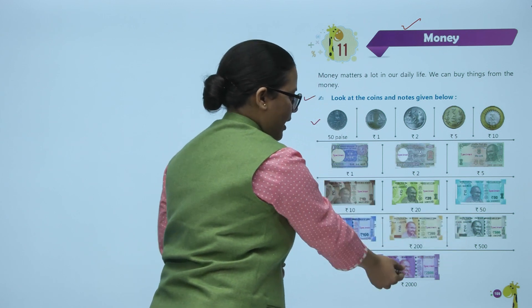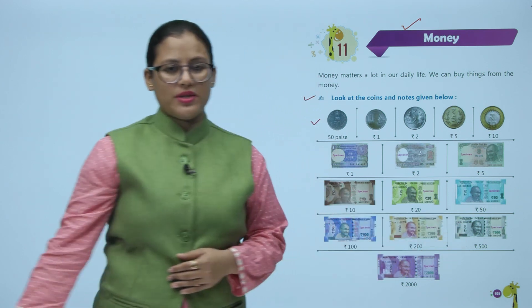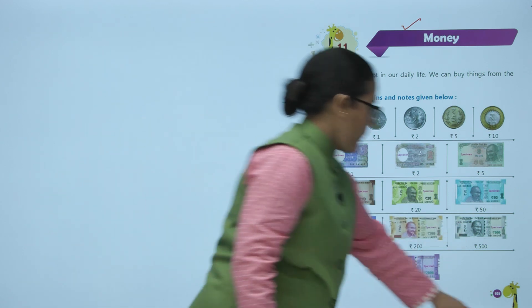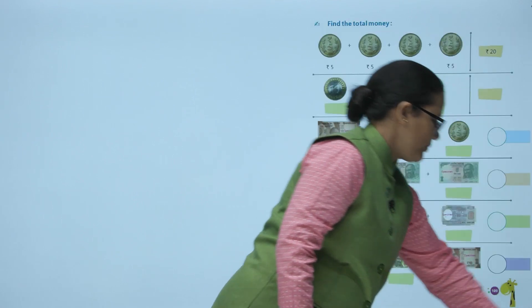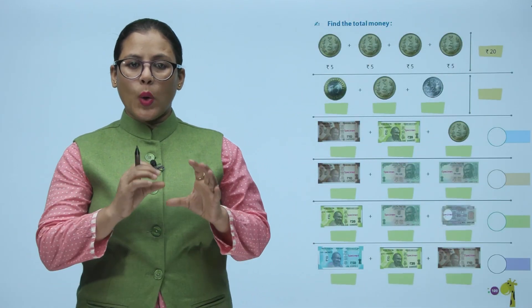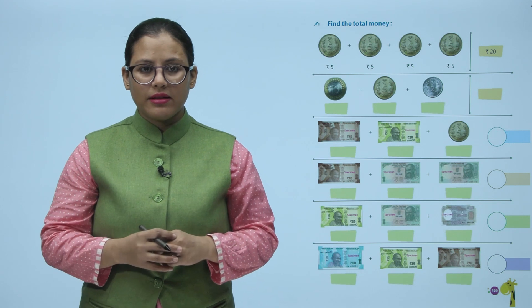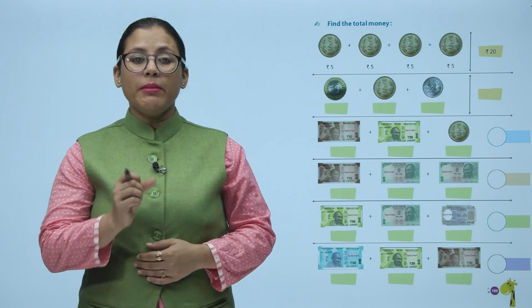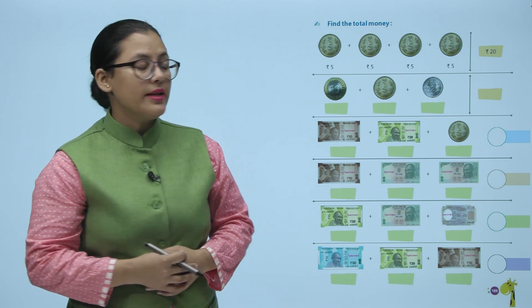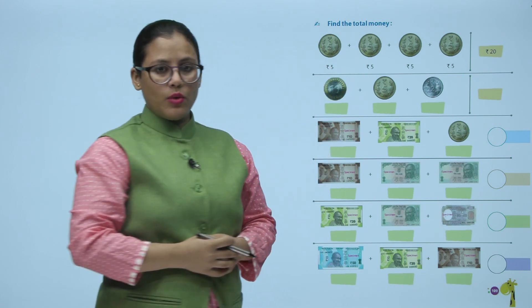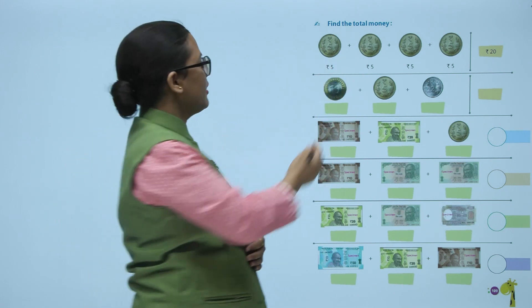500-rupee note and 2,000-rupee note. Now, find the total money. You have some coins and the amounts are given to you. We have to total them. Look, the first coin is a 5-rupee coin.